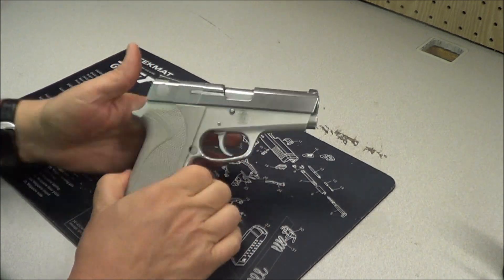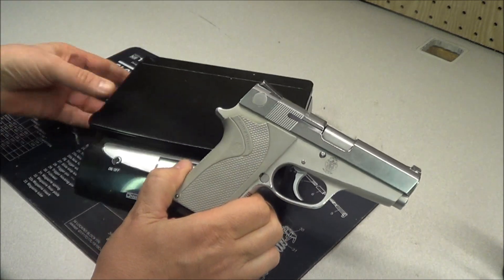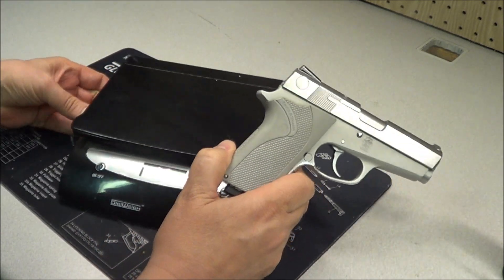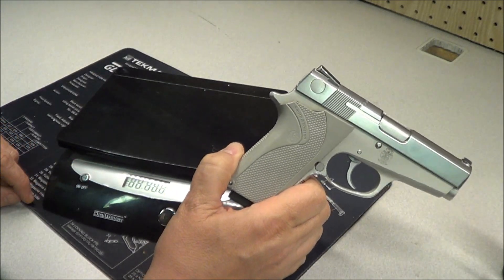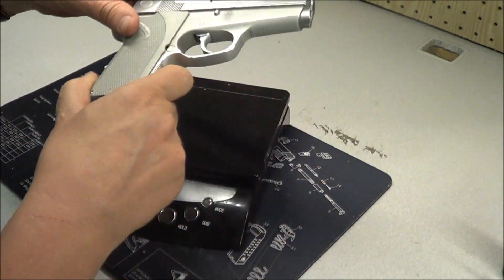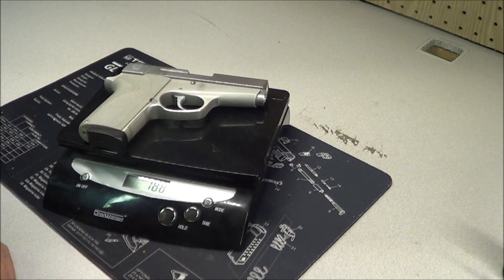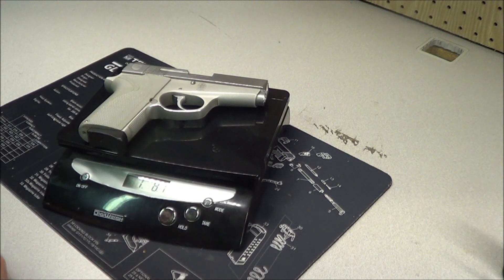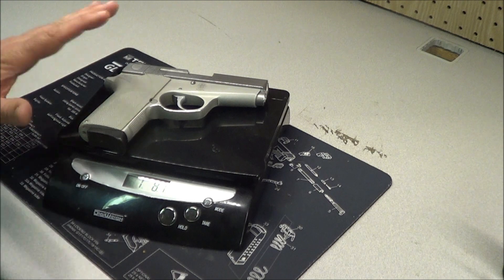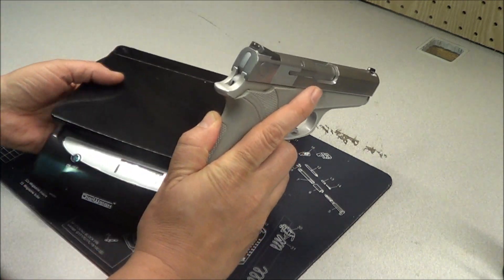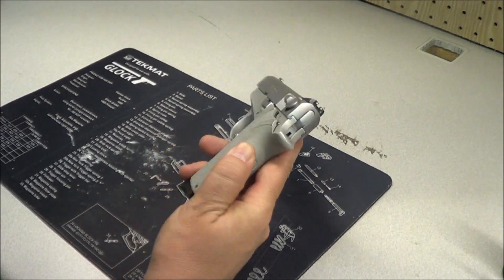The pistol, it's fairly lightweight according to my little postal scale here. It weighs 1 pound 8.7 ounces. So it's 24.7 ounces empty, which is a nice weight. It's not the heaviest, it's not the lightest.